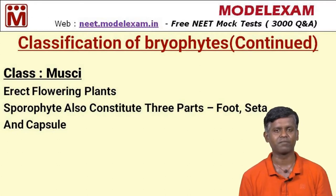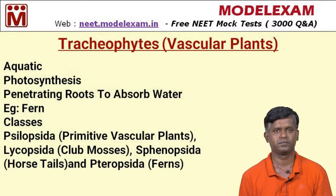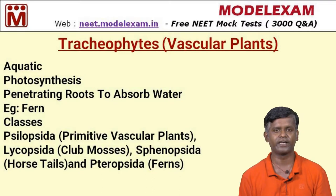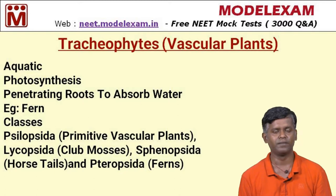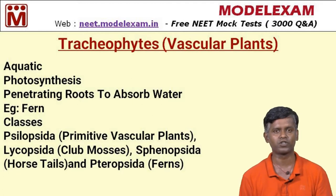Musci consists of erect leafy plants whose sporophyte has three parts: foot, seta, and capsule. Bryophytes are mainly land plants that accumulate on hills and rocks. Tracheophytes, otherwise called vascular plants, can do photosynthesis and have penetrating roots to absorb water. The best example is fern — specifically Azolla, found in rice fields, which has a mutualistic relationship with the cyanobacterium Anabaena azollae, promoting plant growth in rice fields.